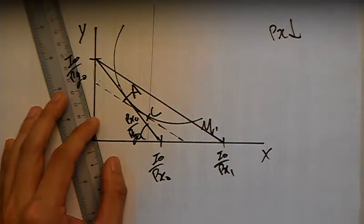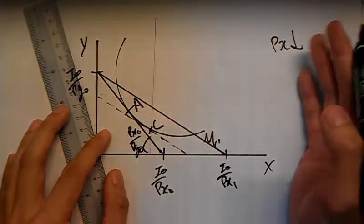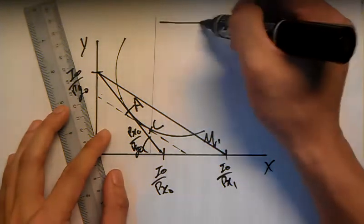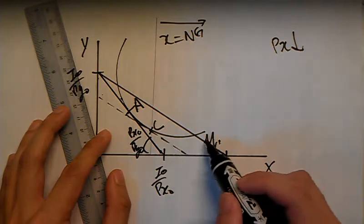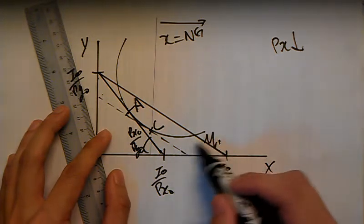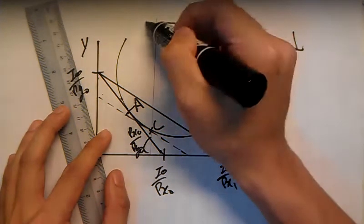Now we will identify the new point B. The new point B lies on this side of the new budget constraint. It's going to be a normal good because real income has increased. If you are unsure about this, check back on the substitution effect versus income effect video.